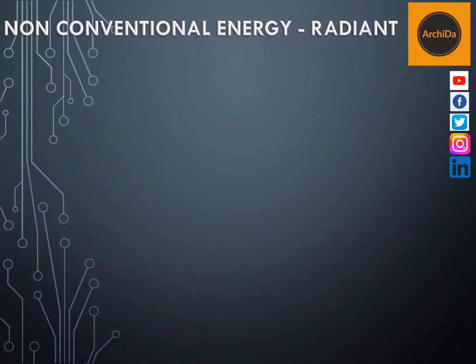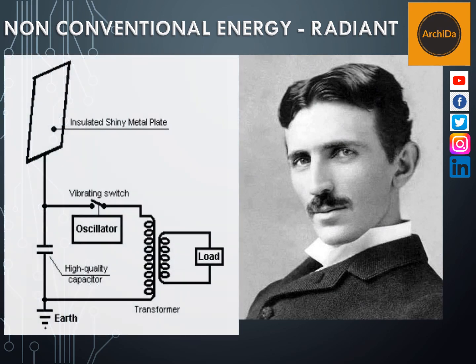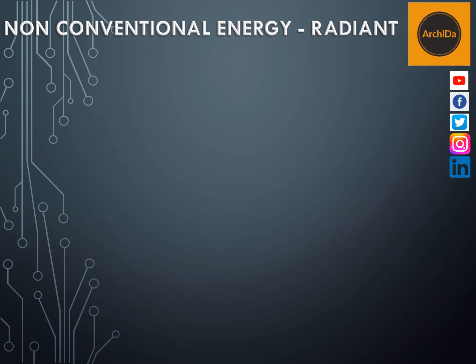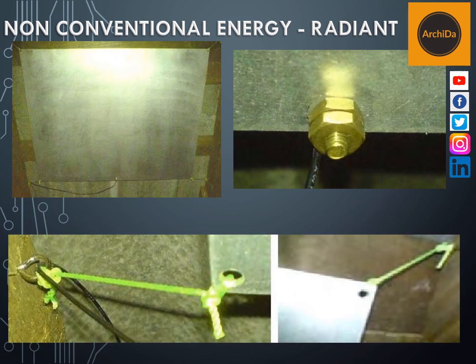Who discovered radiant energy? It is inventor Nikola Tesla. Aside from AC or alternating current, shown on the left is his patent for radiant energy, wherein you need an insulated shiny metal plate, an oscillator, transformer, and a high-quality capacitor — a very simple electrical diagram. One inventor tried to follow it by installing an aluminum metal plate under his roof with a terminal, tied rather than bolted, to prevent the galvanic effect of the radiant energy being collected.